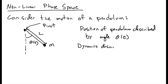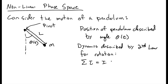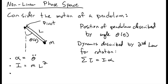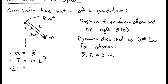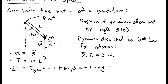How do we describe this? The dynamics of the pendulum is described by the second law for rotation: the sum of all torques must be equal to the moment of inertia I times angular acceleration alpha. Alpha is the second derivative of theta, and the moment of inertia I is mL squared for this case. The sum of all torques is just the torque due to gravity, which is minus R times F times sine of the angle beta, where beta is the angle between the force and the radius vector from the point of rotation. Beta here turns out to be just the same as theta, so the torque is just minus mGL sine of theta.